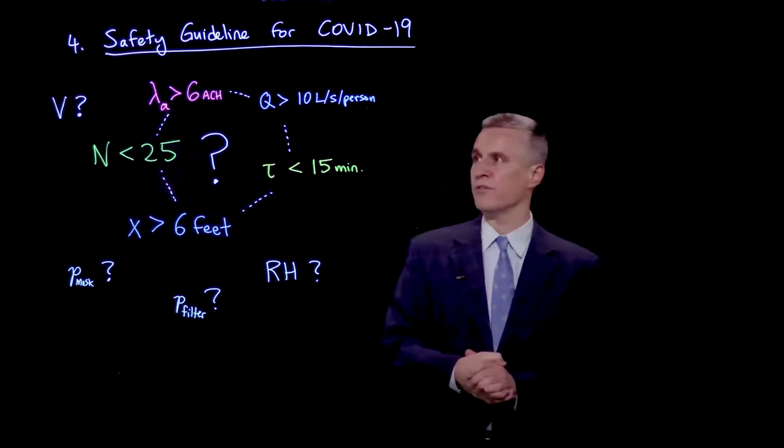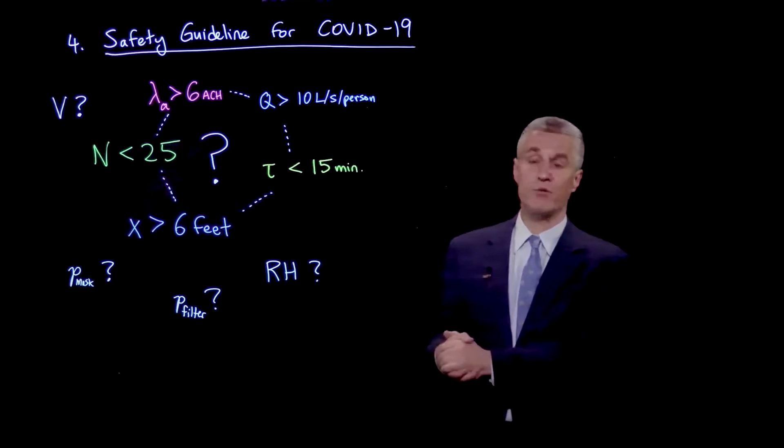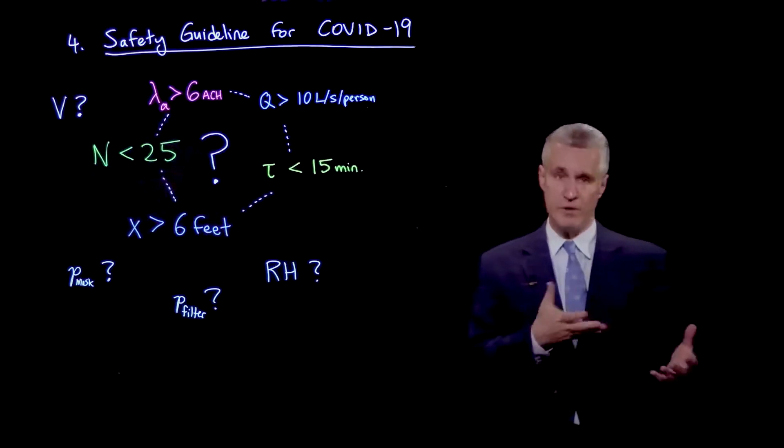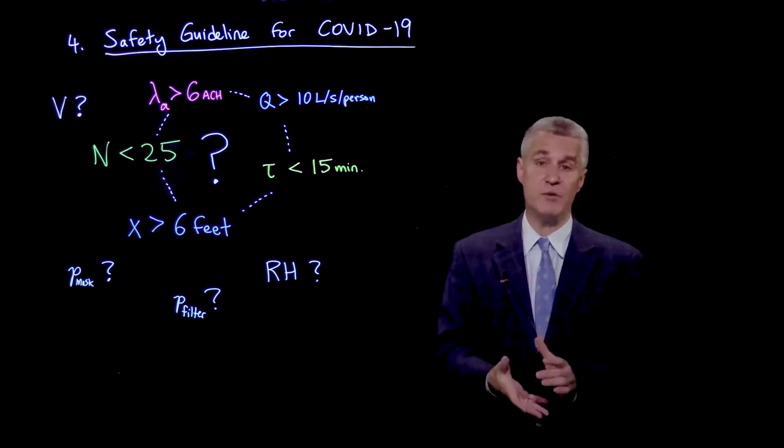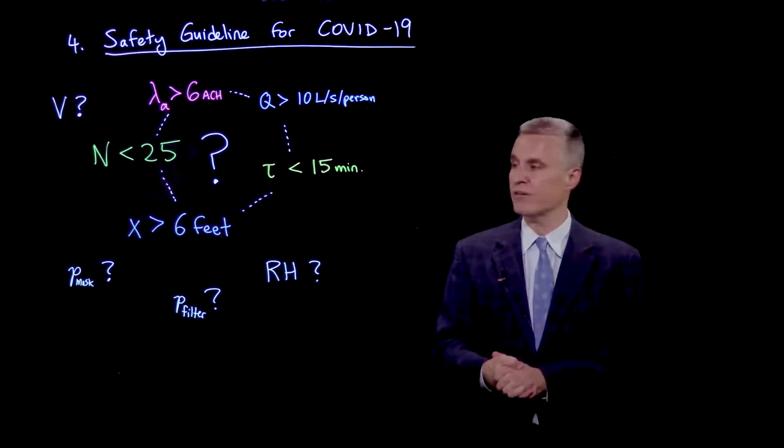In the UK, for example, the fresh air flow rate might be prescribed to 10 liters per second per person or other such numbers. Also, the time that an infected person is in the presence of susceptible people might be limited to, say, 15 minutes. That's involved in the definition of a contact here in the United States.